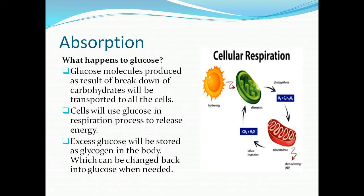If there is excess glucose in the blood, the liver will convert it into insoluble glycogen and store it in the muscles and liver. Glycogen is the stored form of glucose — it is made up of many connected glucose molecules. Whenever the body needs a quick boost of energy, or when the body isn't getting glucose from food, this glycogen is broken down to release glucose into the bloodstream to be used as fuel for the cells.